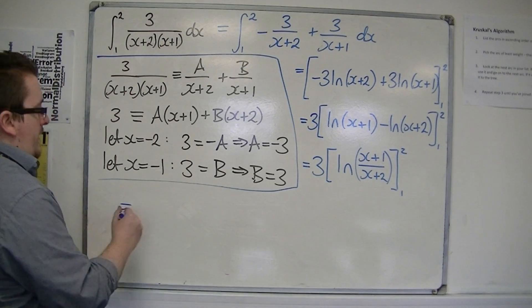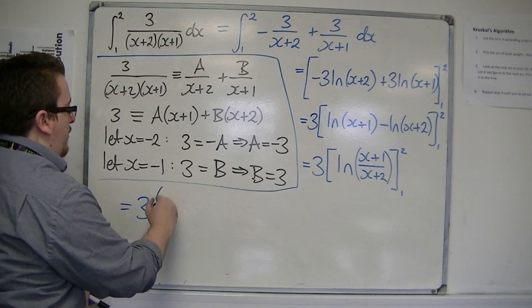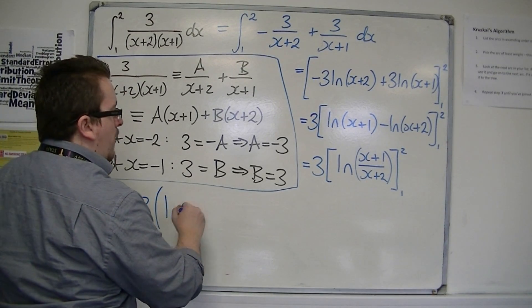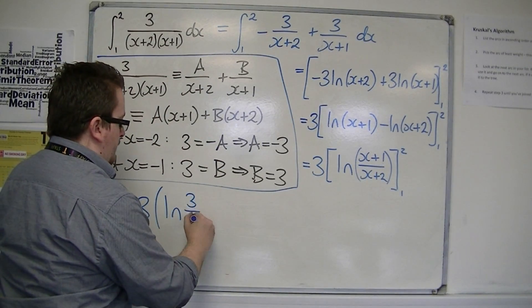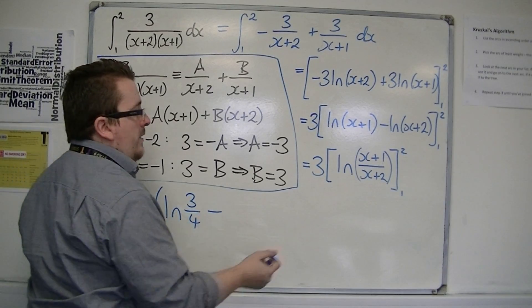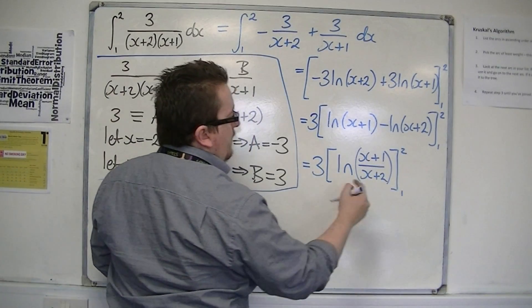So, finishing off down here, that would be 3 times ln of, substituting in 2, so I've got 3/4, take away, substituting in 1, I get 2/3.